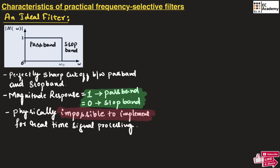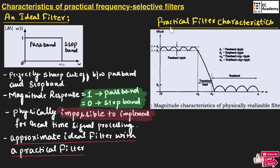So we cannot realize an ideal filter, but we can approximate the ideal filter with a practical filter. Now let us discuss the key characteristics of a Practical Frequency Selective Filter. Take a look at this graph on the screen, which shows the magnitude characteristics of a physically realizable filter.